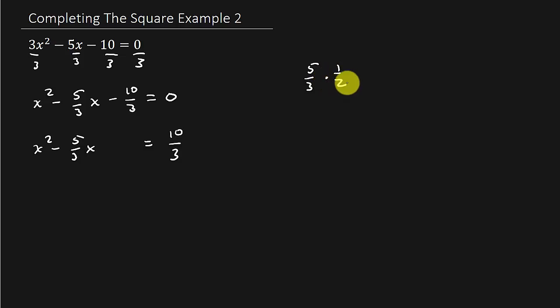And remember, halving something is the same thing as multiplying by 1 half. And so that's going to give us 5 over 6. And then once you half it, then you have to square it. So 5 squared is 25, 6 squared is 36. So that's plus 25 over 36.